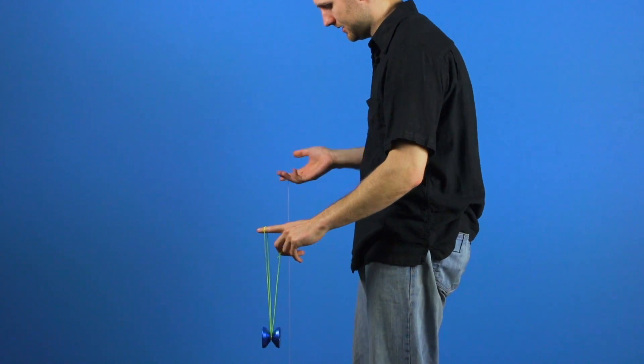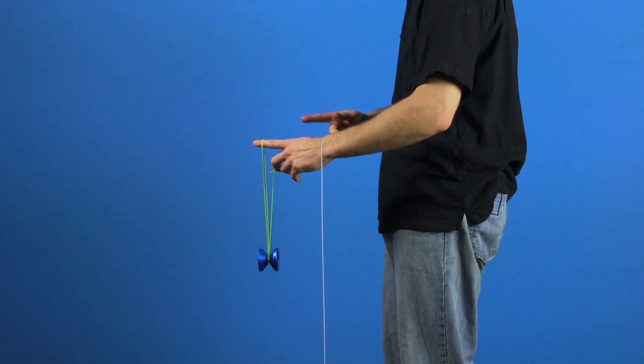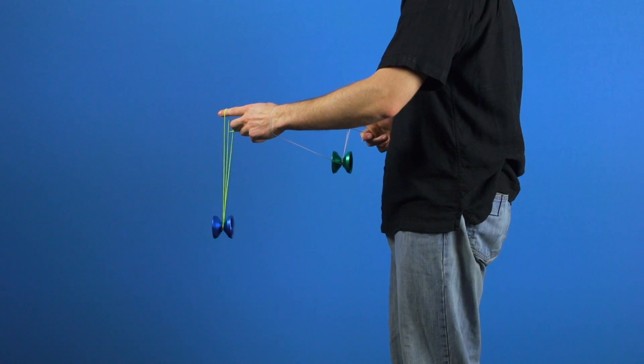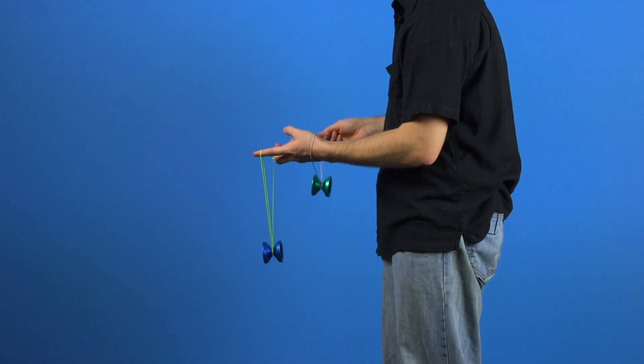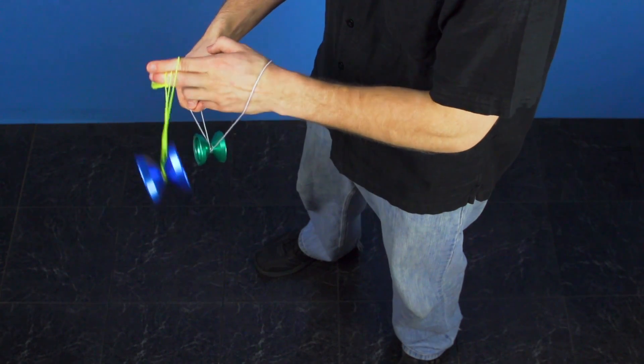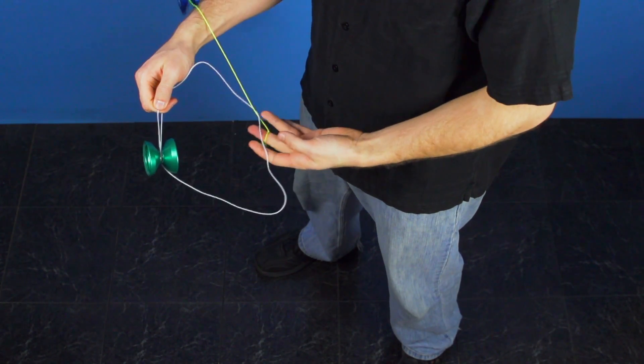Get into your Gunslinger mounts, throw the right hand over, and land the mount. From here, take your right hand and pinch the string. At the same time, throw with your index finger of your opposite hand and pull your wrist through the string formation.